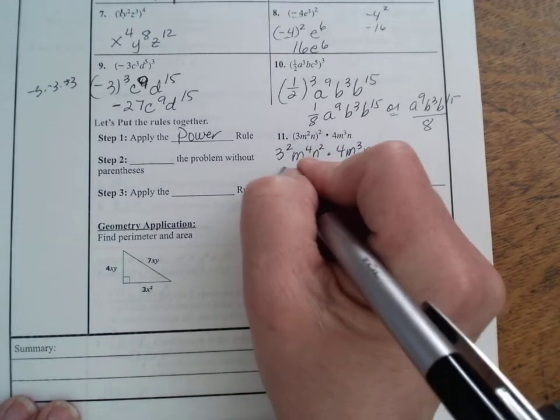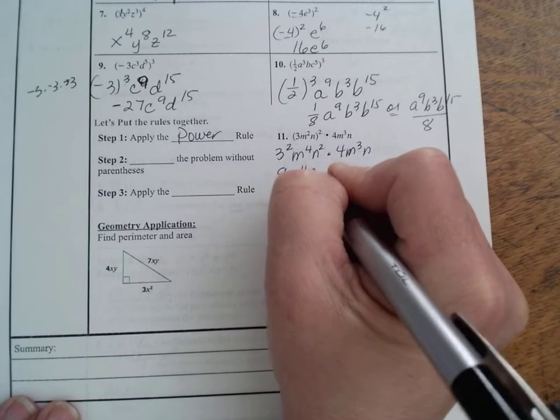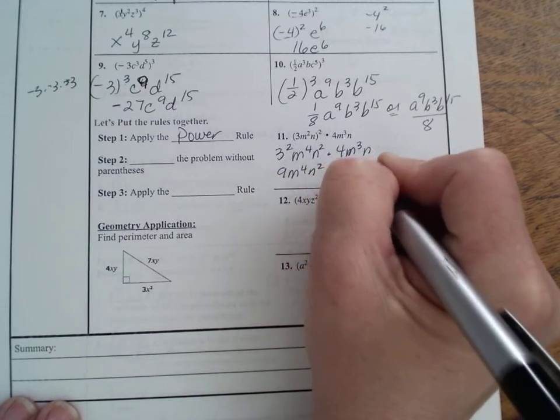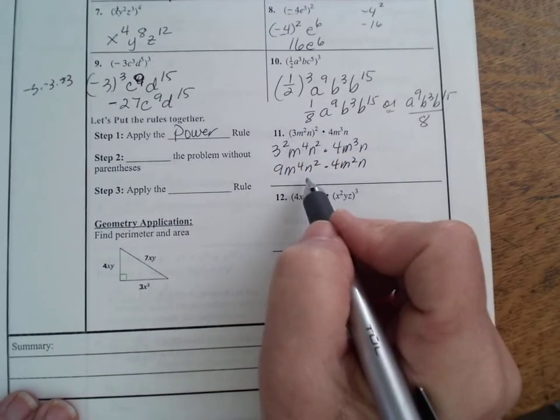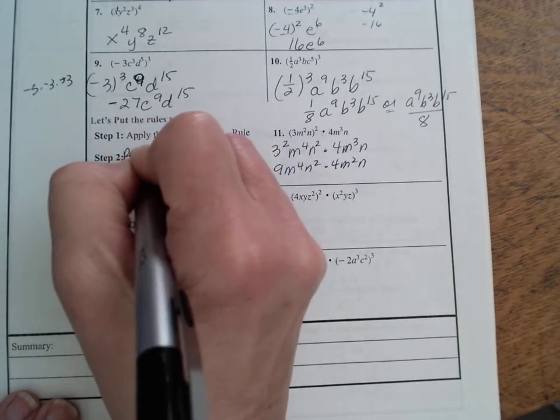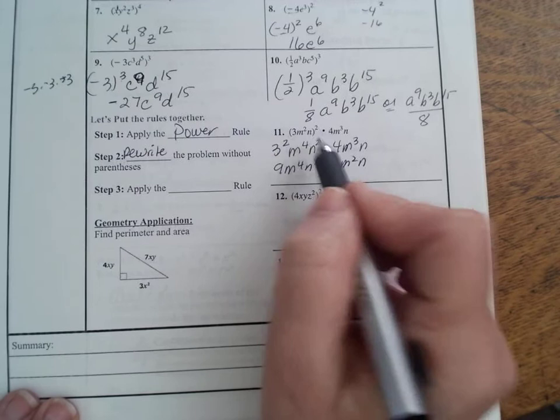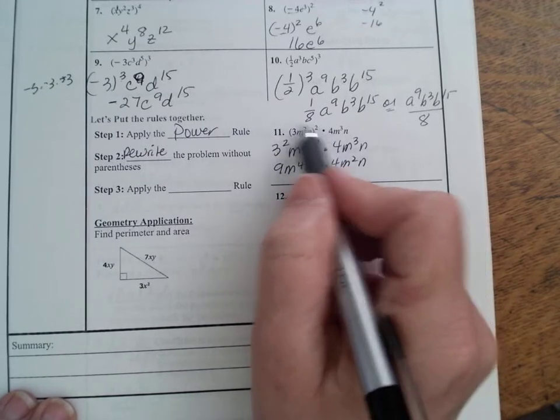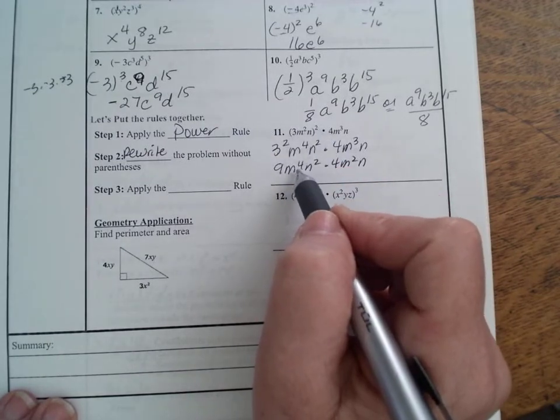So 3 squared, that would be 9, m to the fourth n squared. I know this is a lot of rewriting, but now rewrite the problem without parentheses. That's what you just did, meaning evaluate it out. Now apply the product rule.